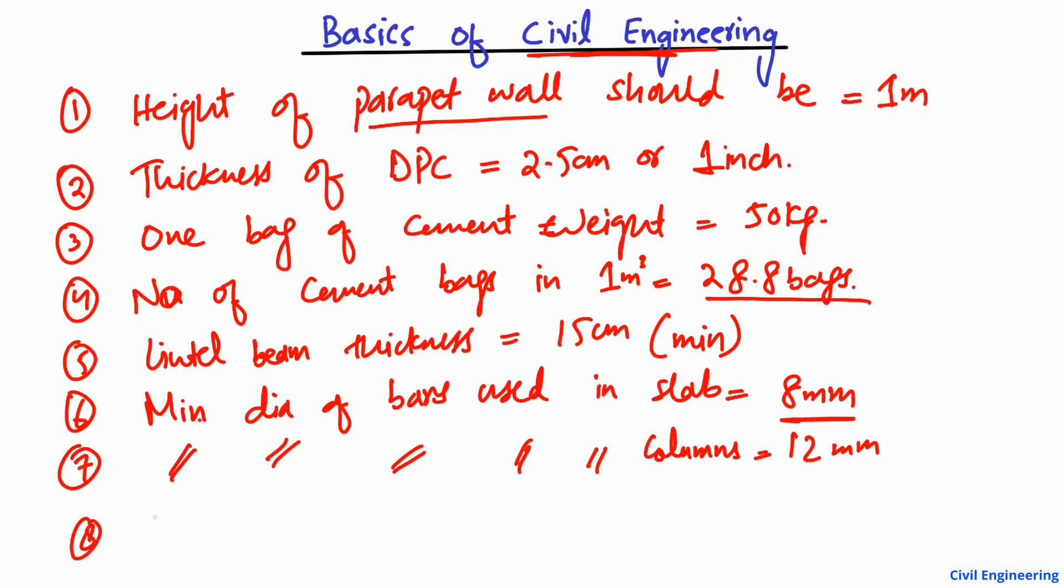The last important point is that the maximum chair spacing allowed equals one meter. This is the maximum spacing between the chairs during construction.